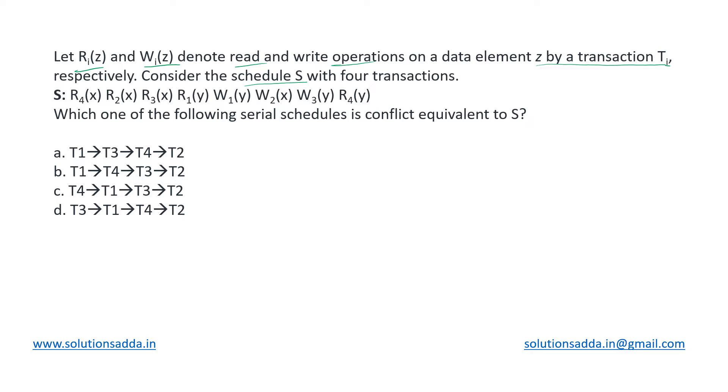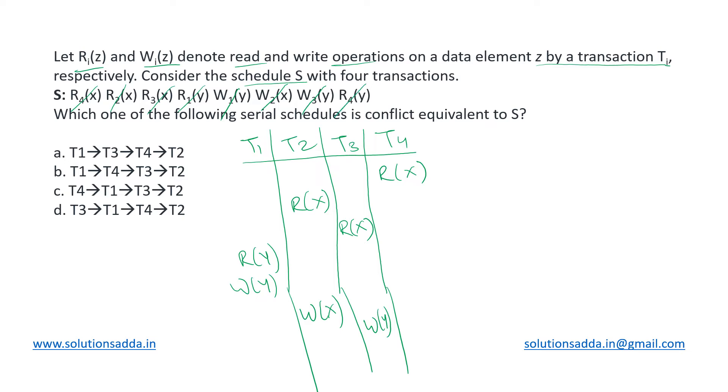Let us write down that schedule as the tabular format. Four transactions T1, T2, T3, and T4. First we are having read 4 of x, then we are having read 2 of x. After that we have read 3 on x. Third transaction makes the write operation on data element x. Then we have read 1 on y, after that write 1 on y. Next we have write 2 on x, finally we have write 3 on y, and at the end read 4 on y. So this is the tabular format for the given schedule.